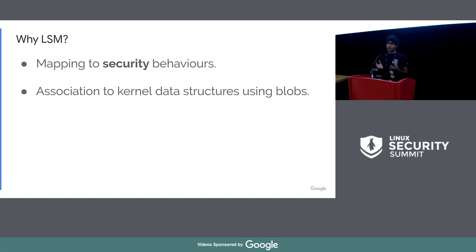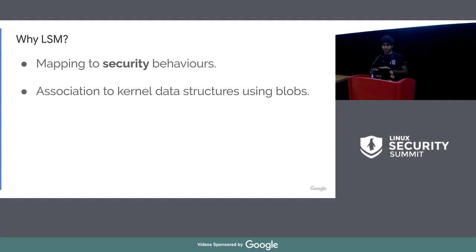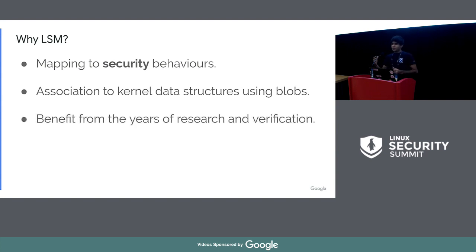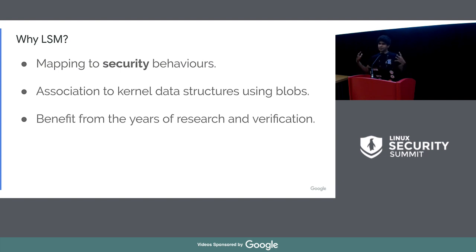LSM also has good mapping to kernel data structures — when you access a particular kernel data structure, that's where the LSM hook comes into play. It gives you access to security blobs, which the LSM can use to maintain bookkeeping or state. This helps you build more complicated detections without complicated user space code. You also benefit from LSM being a proven mechanism to do security in the kernel — years of research and verification have gone into the space. You want that extensibility with something as flexible as eBPF, but you want it to be an LSM so it's a formally proven mechanism, not just a random tracing thing.